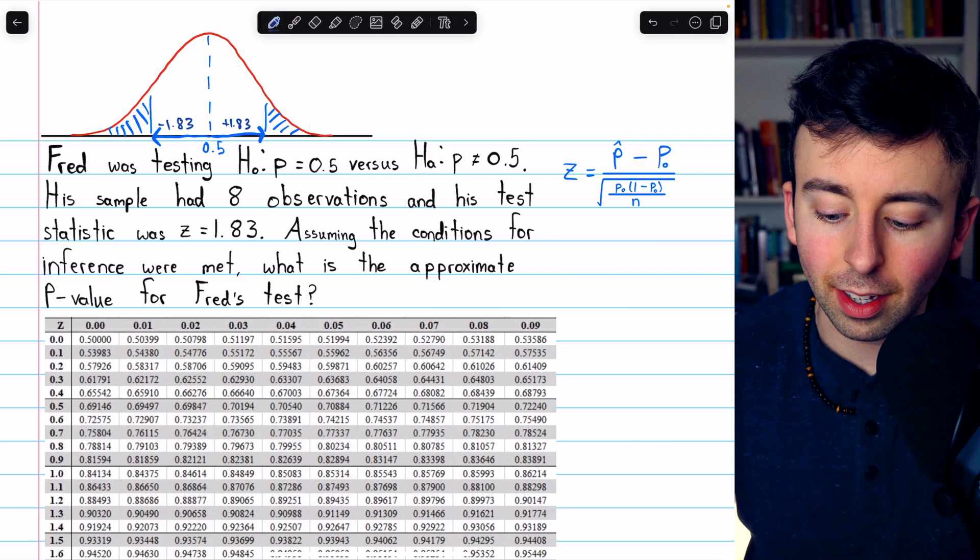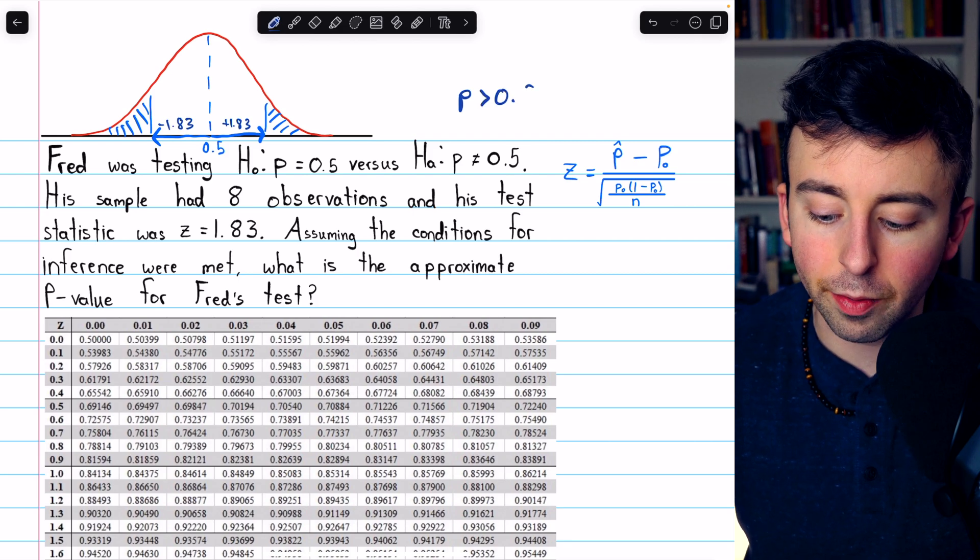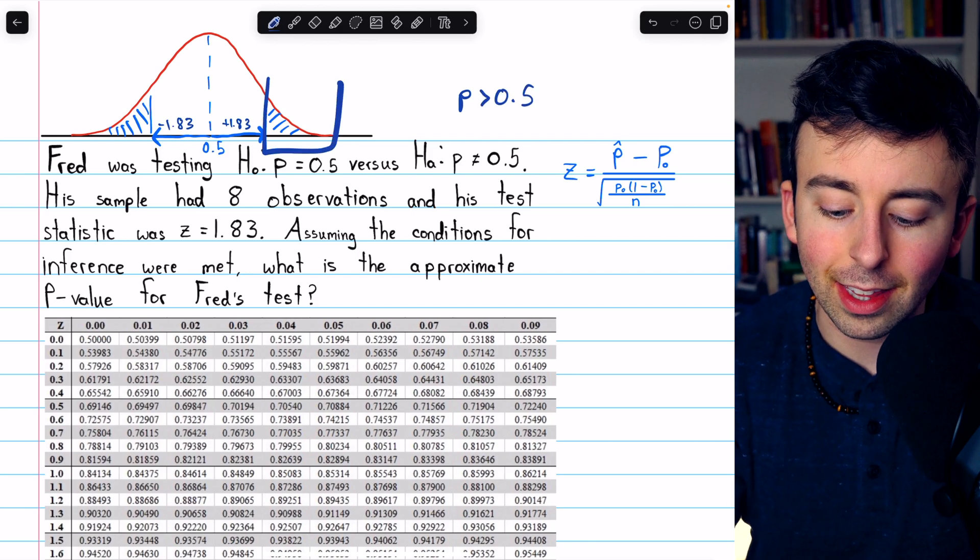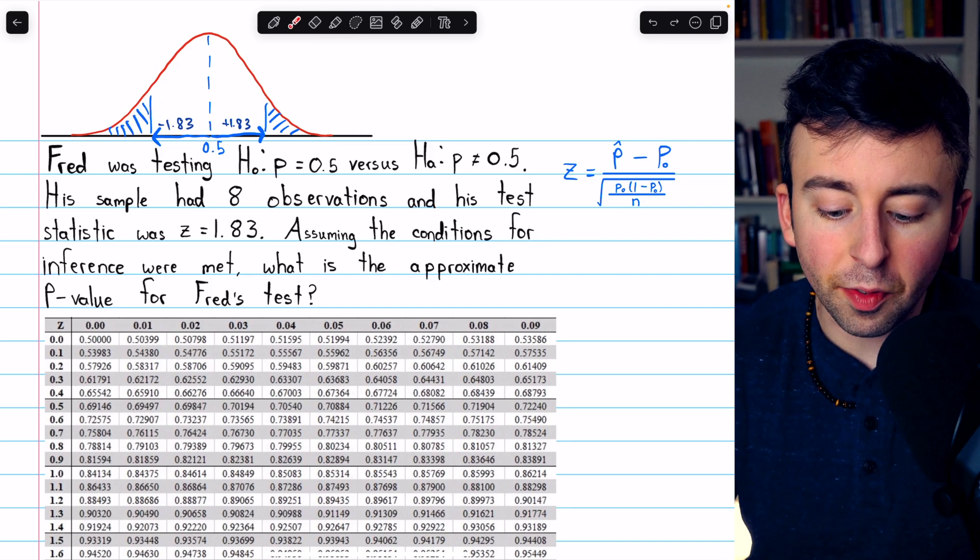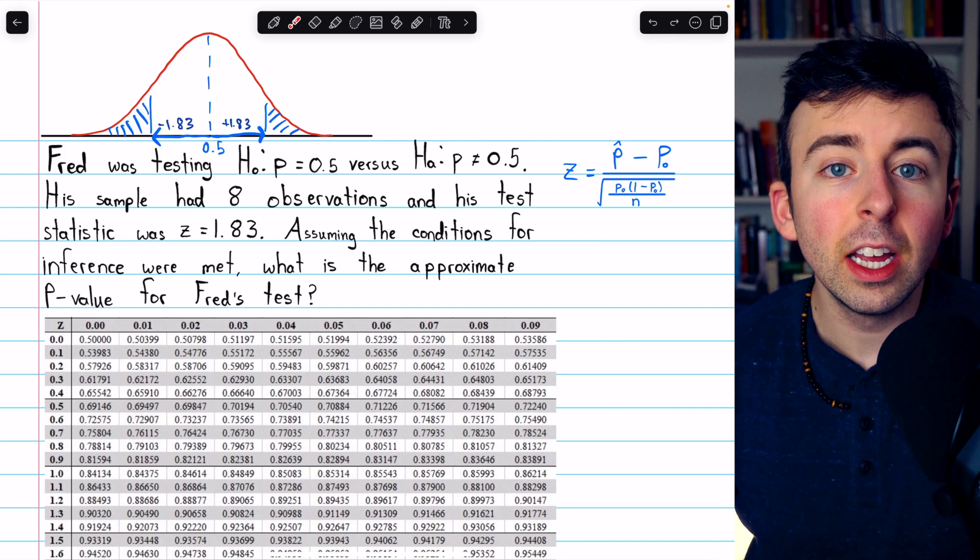If the alternative hypothesis was that p is greater than 0.5, we'd only be interested in the upper tail. Now, looking at the picture, how are we going to use the z-table to find these two areas?